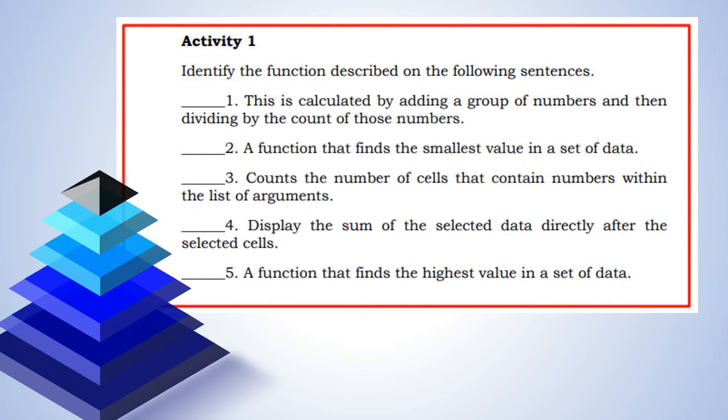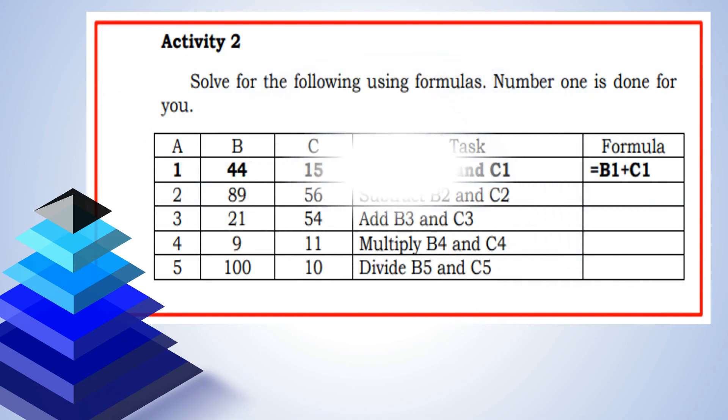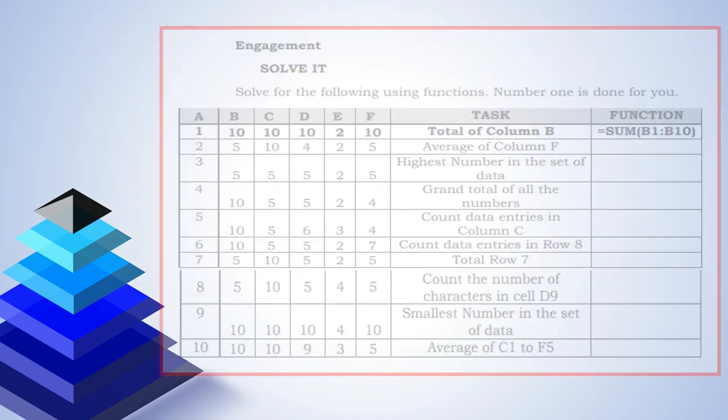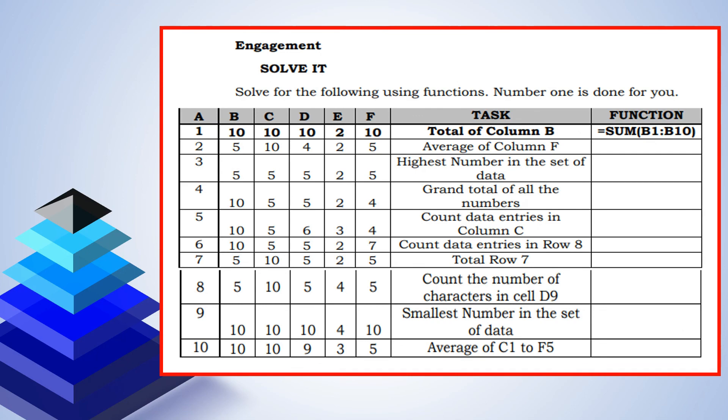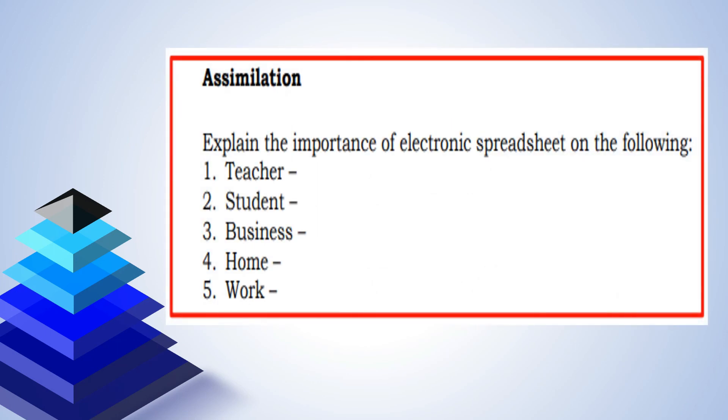Now you already know about the spreadsheets. Let us now answer our learning task for the week. In activity 1, identify the function described in the following sentences. Activity 2, solve for the following using formulas. Number 1 is done for you. In engagement part, solve the following using functions. Number 1 is done for you. And the last learning task is assimilation. In this part you need to explain the importance of electronic spreadsheet to the following: 1. Teacher. 2. Student. 3. Business. 4. Home. And 5. Work.